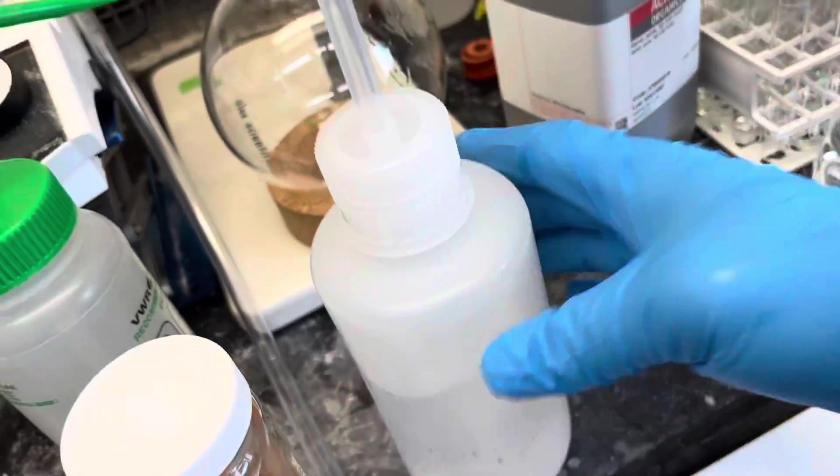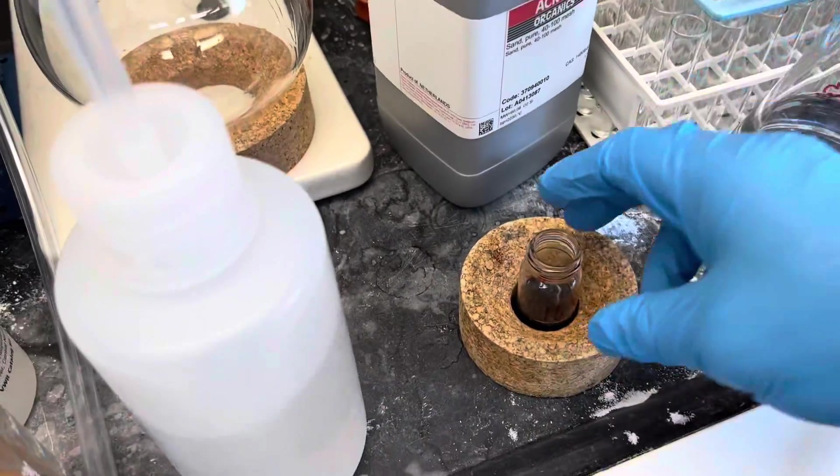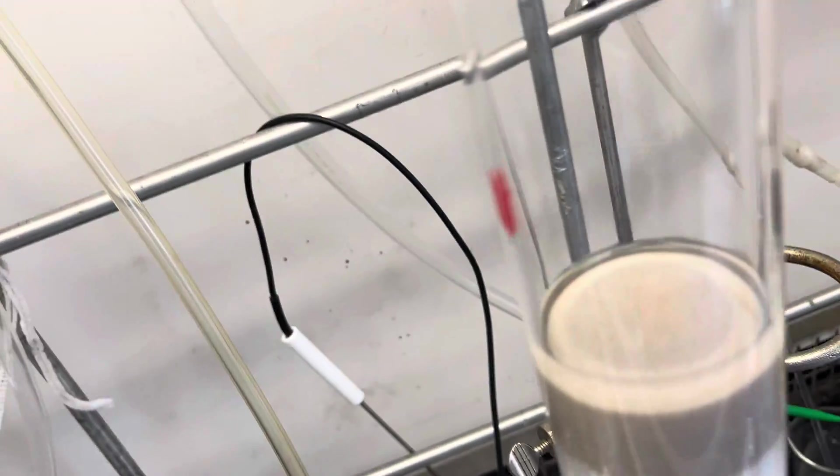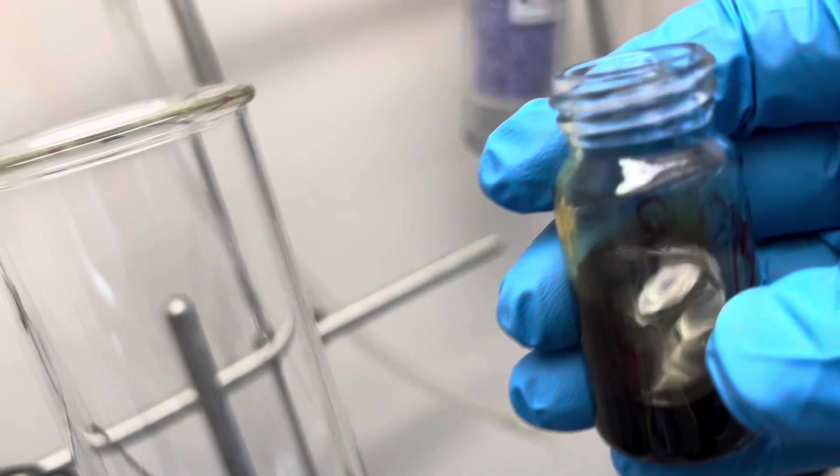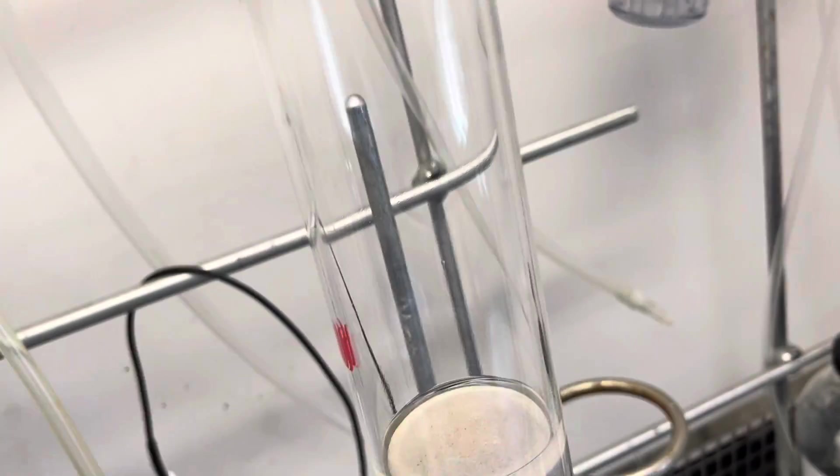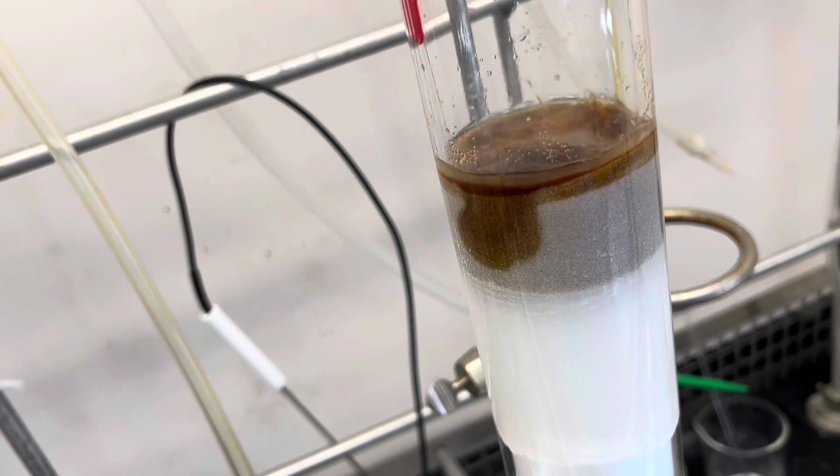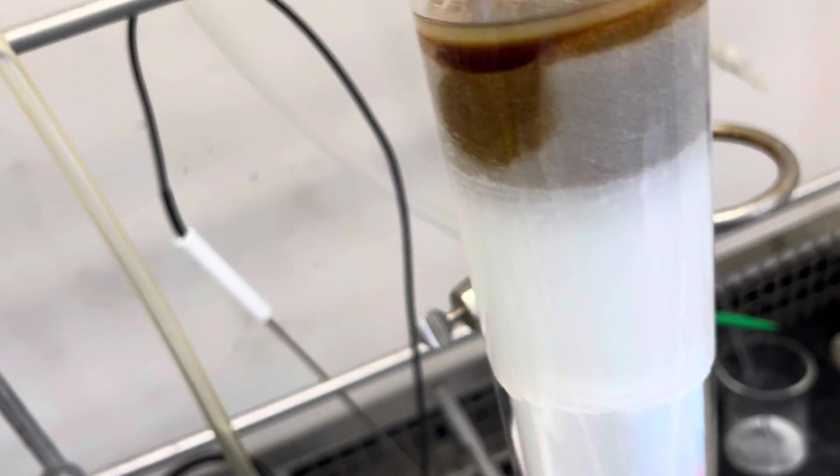Here I'm using the hexane to dissolve my crude sample in the vial and I'll swirl it before pouring it to dissolve. In some cases if it is not dissolved completely you can add a couple of drops of ethyl acetate. Here I added the sample on the sand layer.